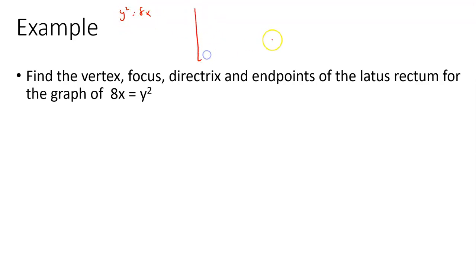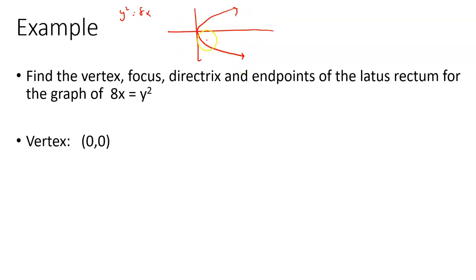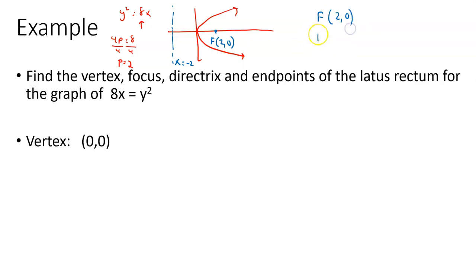It's a sideways opening parabola, because it's not a y equals x squared — that would be up and down. This is x equals y squared with a positive value before the x, so it opens sideways. Vertex is (0, 0). If you want to find information about the focus, we look at that number before the x. There's a 1 before the y squared and an 8 before the x, so 4 times p is equal to 8. Divide both sides by 4, and p is equal to 2. From the vertex, we go 2 to the right — that's our focus at (2, 0). When we go 2 to the left, there's our directrix at x equals negative 2.